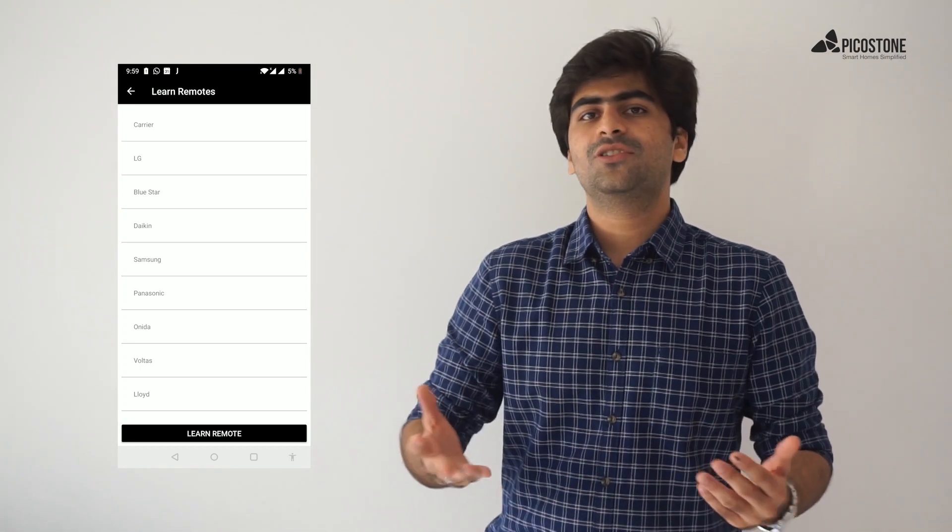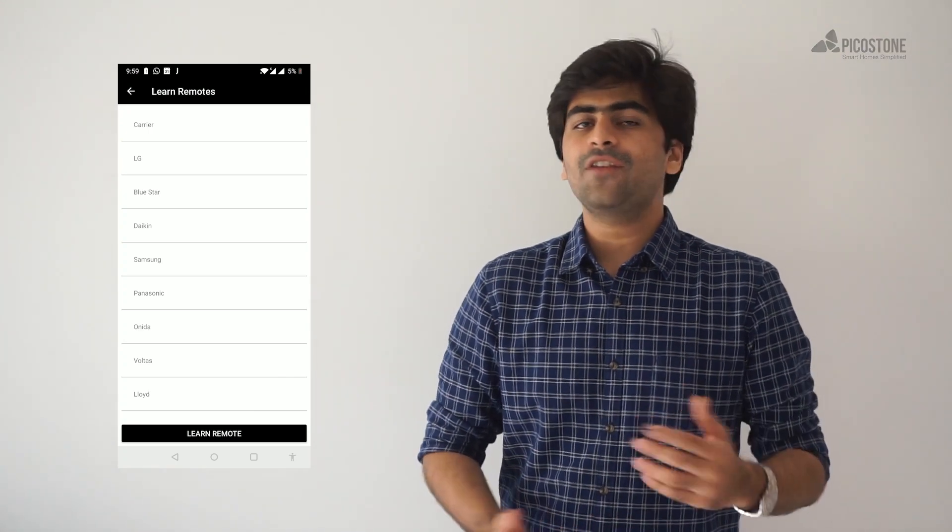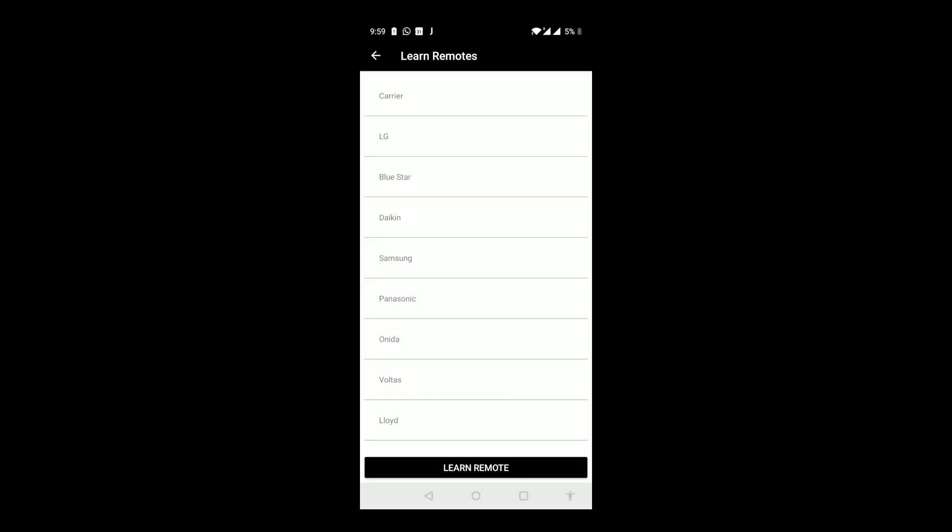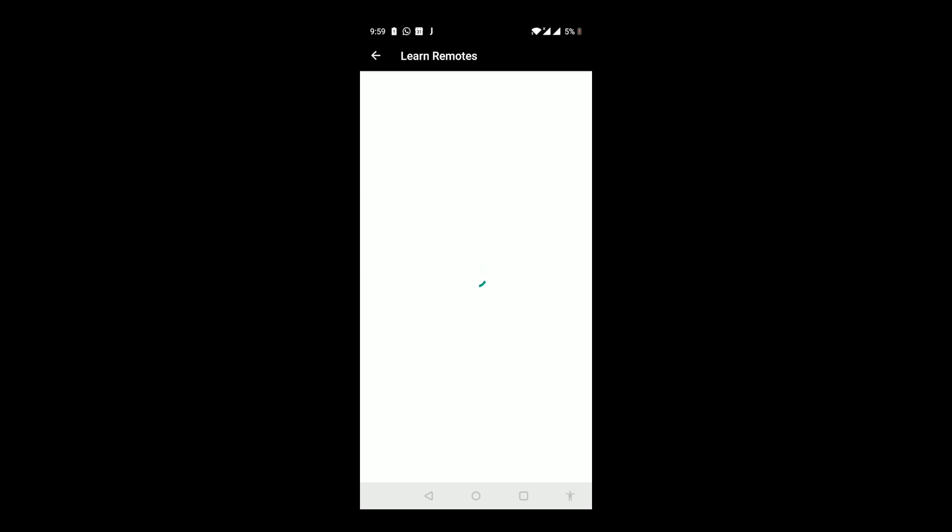You will be able to see all the remotes that are already pre-learned for you. Check if any of the remotes matches the remote you want to use. Once you test it and feel that it works, tap the save button.